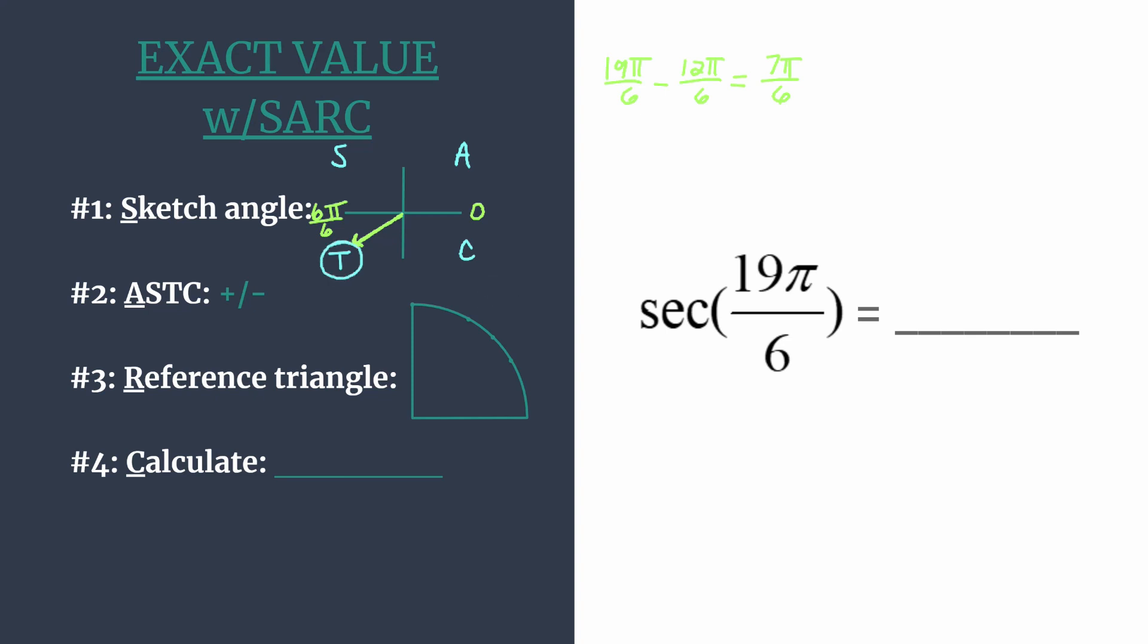We care about quadrant 3, where our angle's terminal side is, and we're finding secant. Only tangent and cotangent are positive in quadrant 3, so our final answer is negative. We determine the sign here so that for all the rest of the steps we can just assume coordinates and triangles and angles in the first quadrant, only dealing with positive values, eliminating one possibility for errors.